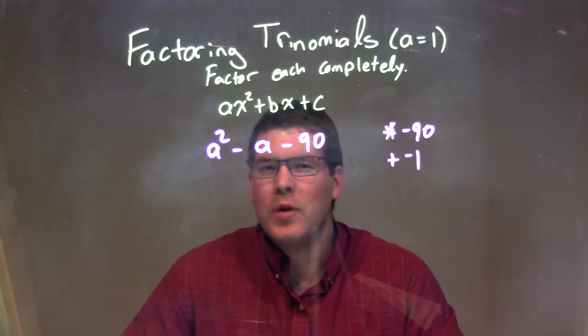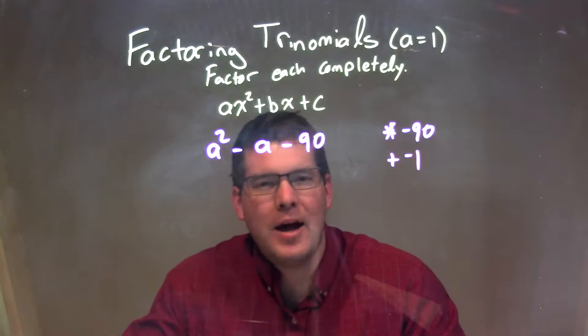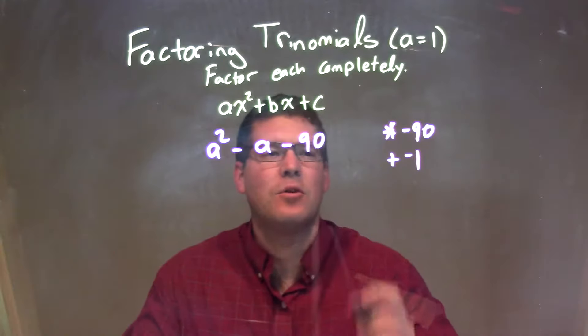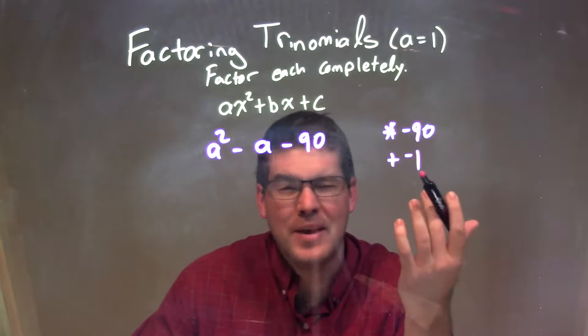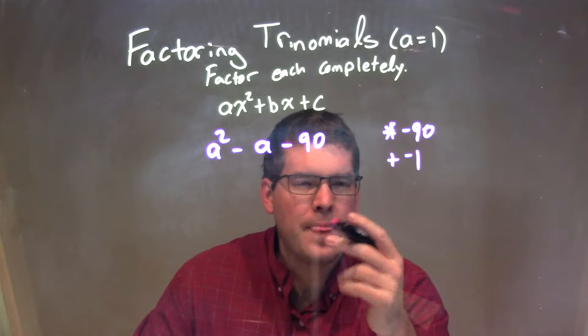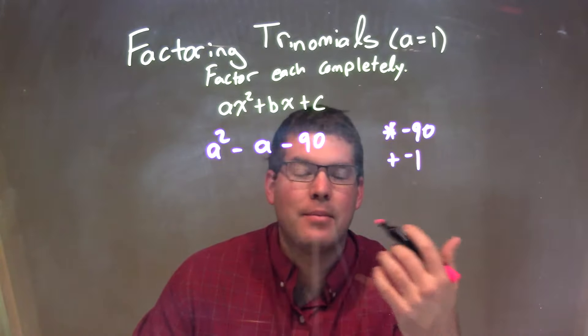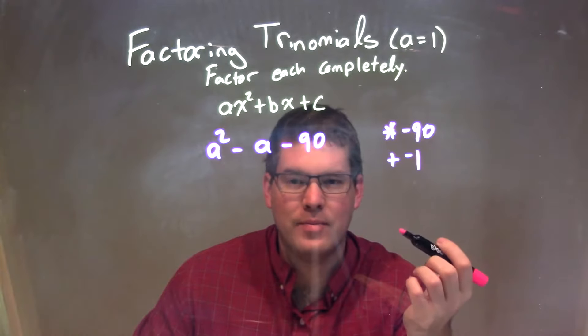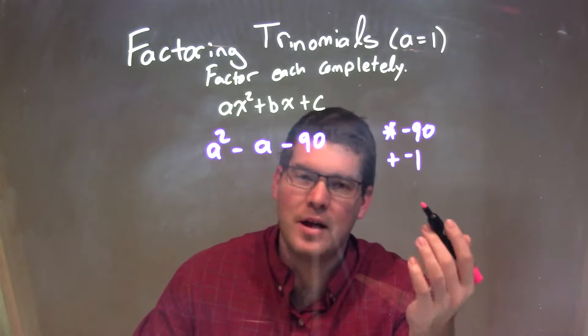Well, this one's a little tricky. So 90, I think two numbers that are easy to multiply by 90, that's 9 and 10, right? 9 times 10 is 90, but we're negative 90, so one of them has to be negative. But those two numbers are 1 apart, so negative 10 plus positive 9 is negative 1, and negative 10 times positive 9 is negative 90.